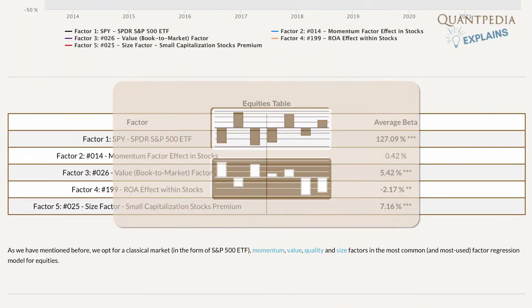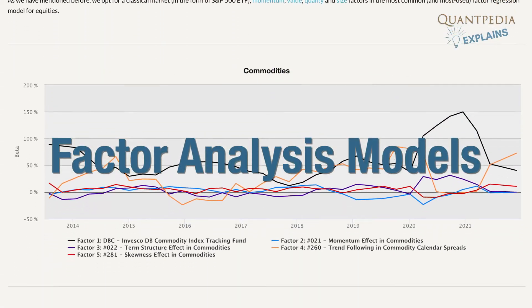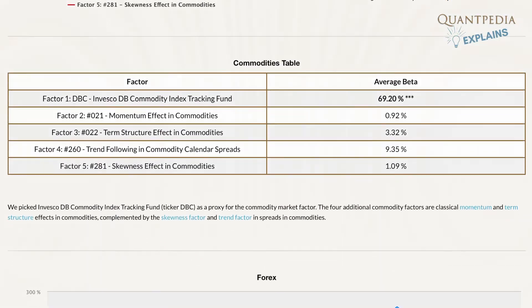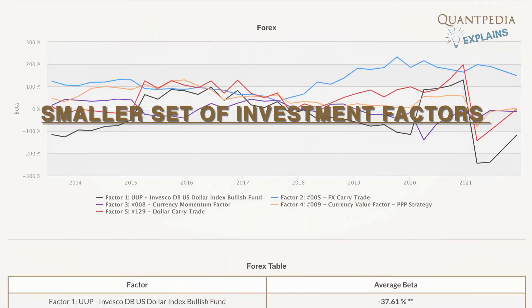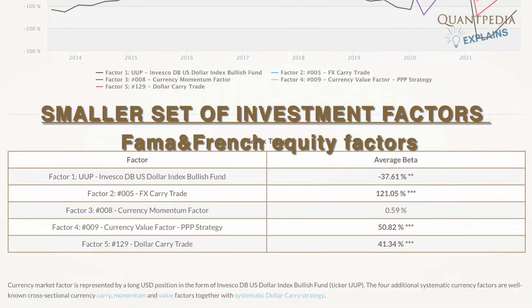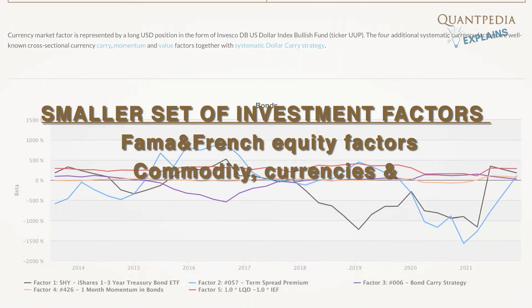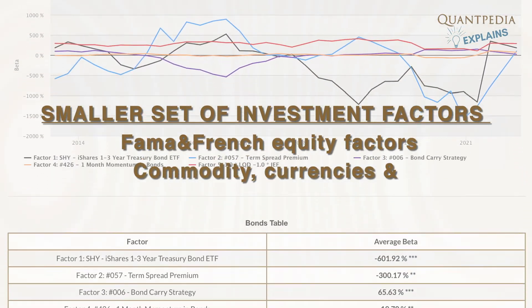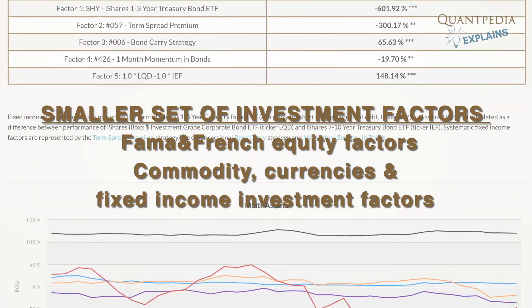Additionally, you can use a report called Factor Analysis Models to analyze your model portfolio by using a smaller set of investment factors like classical Fama and French equity factors and comparable commodity, currencies, and fixed income investment factors.